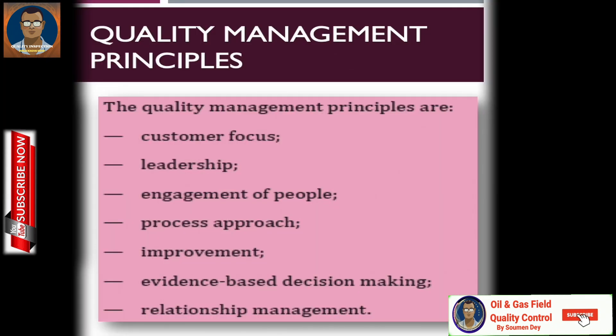From ISO, we can find the quality management principles, which are: customer focus — whatever you are doing in an organization, it will have no value until and unless the customer recognizes and is satisfied with it. So customer focus is most important for all organizations. The other principles are leadership, engagement of people, process approach, improvement, evidence-based decision making, and relationship management.